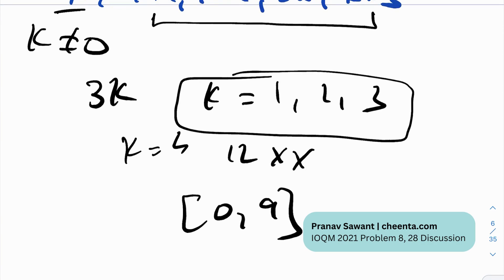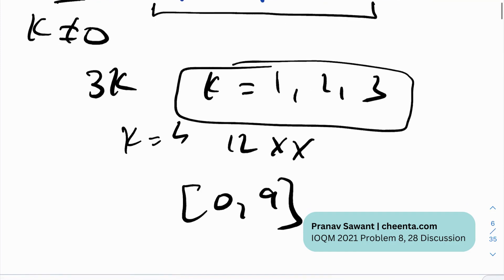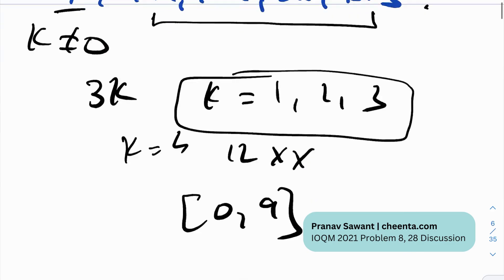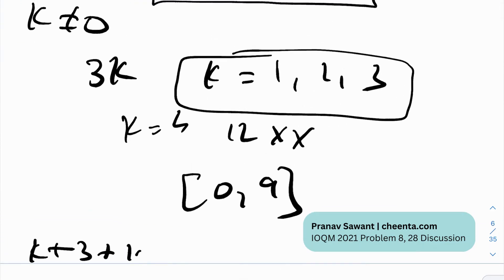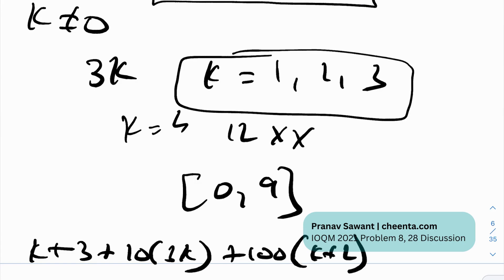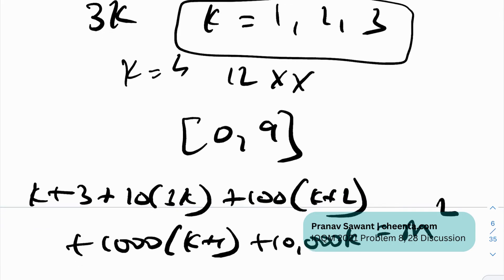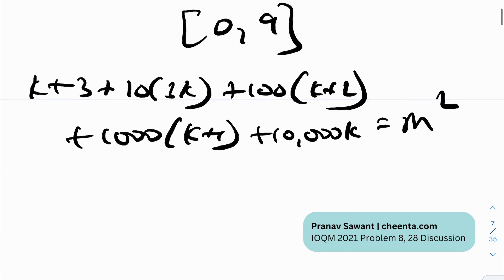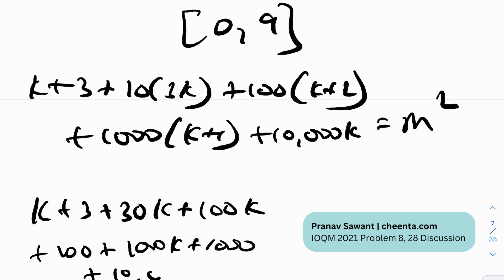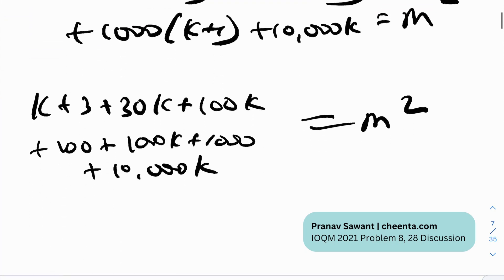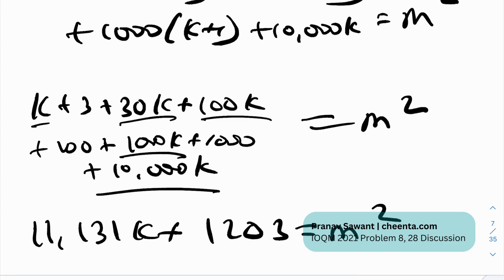Because, well, this is the number. If this is the number, if I can expand that and write it in the full format, like we did for ABCD or ABC, let's see what we get. So you'll get k plus three plus 10 times 3k plus 100 times k plus 2 plus 1000 times k plus 1 plus 10,000 times k, because it's a five-digit number, is equal to m squared for some value of m. And we need to find the sum of digits of that value of m. So if I just simplify this, what will I get? k plus 3 plus 30k plus 100k plus 200 plus 1000k plus 1000 plus 10,000k. And that is essentially equal to m squared. So if I just calculate this, this becomes 11,131k plus 1203 is equal to m squared.